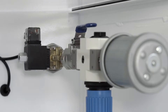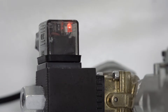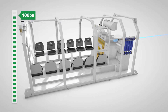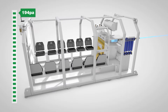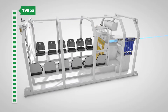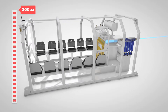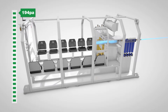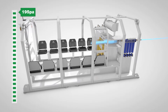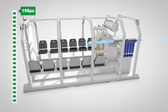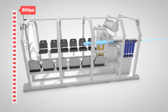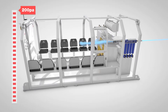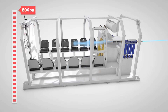Sensors within the chamber switch the air intake on and off, emitting periodic bursts of compressed air to maintain an internal pressure of 200 Pa. This creates a positive pressure seal, ensuring contaminants cannot enter the refuge chamber from the outside environment.